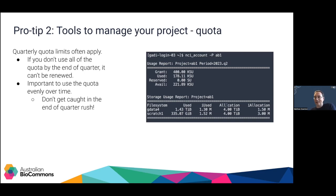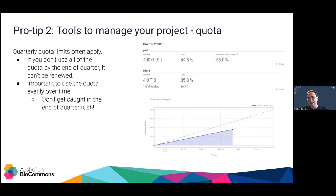At NCI there is a command called nci_account that gives you a current overview of where you are with your quarter — it'll tell you about the grant, the number of service units you've used so far, how much current jobs are going to use, and how much you have available. It will also give you some information about storage. In the user portal, you can also get an overview of your project that may be a bit easier to understand, showing where you are in using your quota and how much is expected to be used by end of quarter at your current rate.